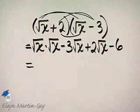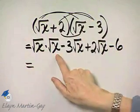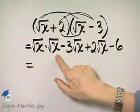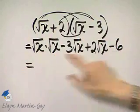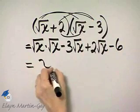Now let's simplify what we have. Square root of x times the square root of x. It is the square root of x squared, if you'd like. But that is still x.